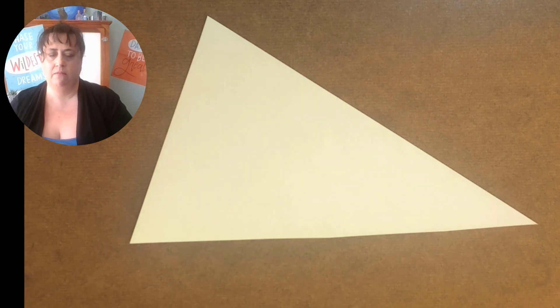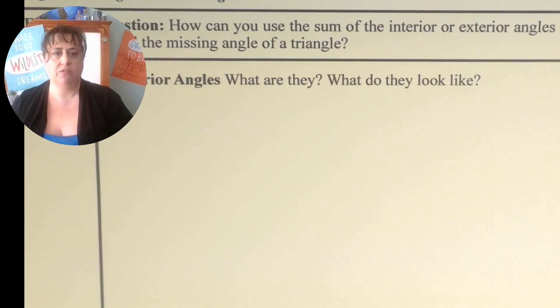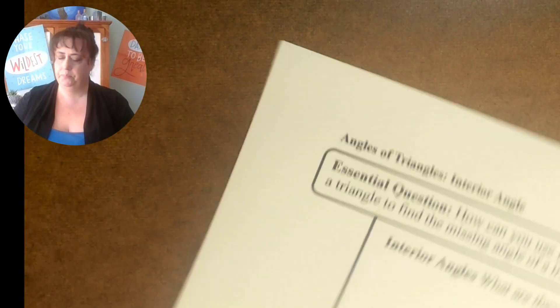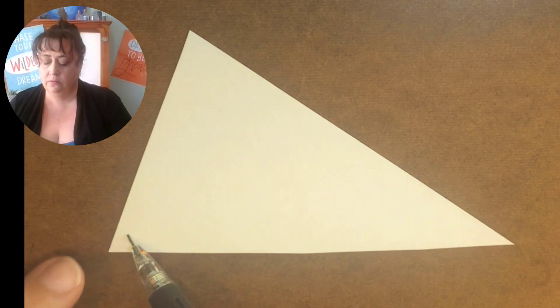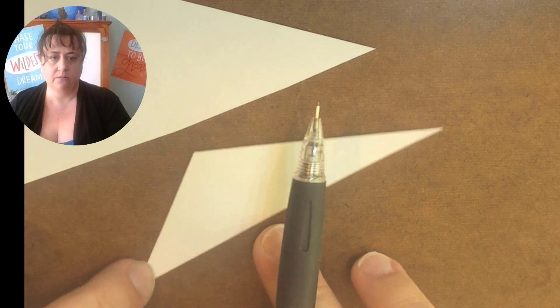So those triangles can look anything like you want. There's an example of a triangle that I made and that's where we're going to start. What are interior angles? What do they look like? An interior angle is the inside angle of a figure. These are the interior angles.